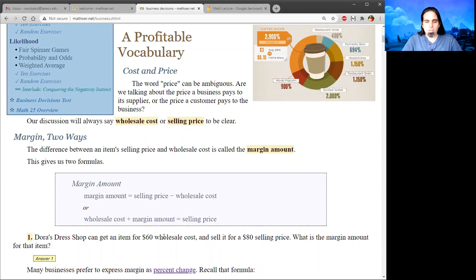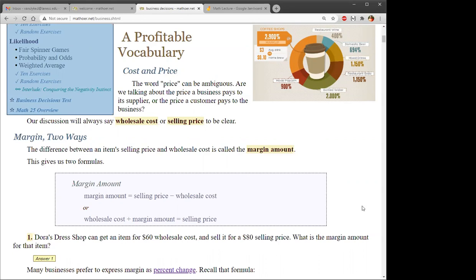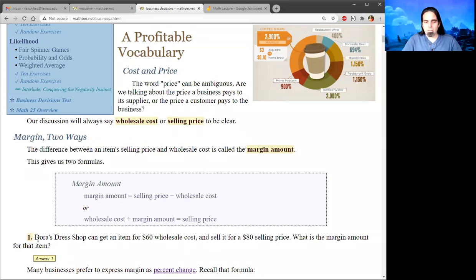So just to do one in our head. Dora's dress shop can get an item for $60 wholesale cost, and sell it for an $80 selling price. What's the margin amount for that item? Alex, are you going to chime in or should I answer my own questions? I wasn't able to hear what the question was. Number one here on the screen. Dora's dress shop can get an item for $60 wholesale cost, sell it for an $80 selling price. So what's the margin amount for that item?